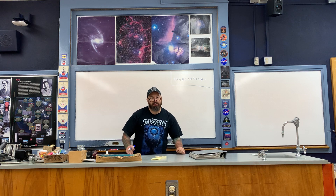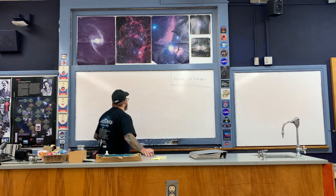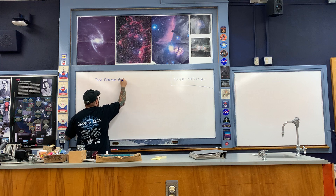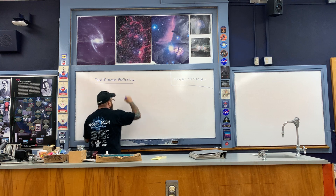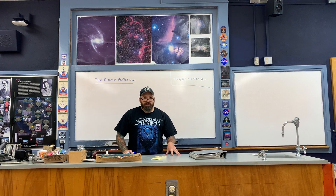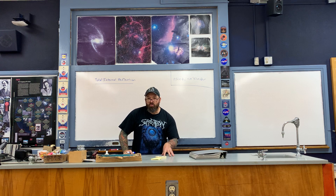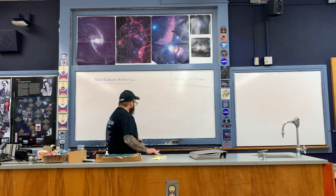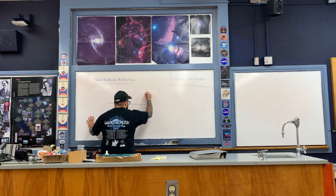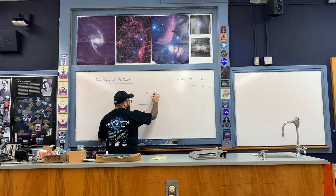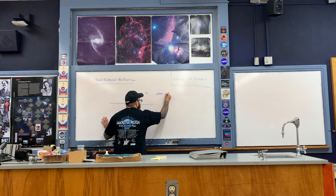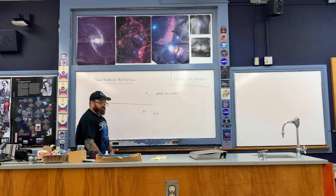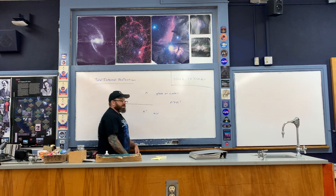This is the last lecture for today and it covers total internal reflection. Total internal reflection is a phenomenon that occurs when light refracts from a high to low index of refraction — for example from water to air or from glass to air. Here is a boundary between two different indices of refraction: this side is glass or water, and this side is air, so N is greater than N prime.